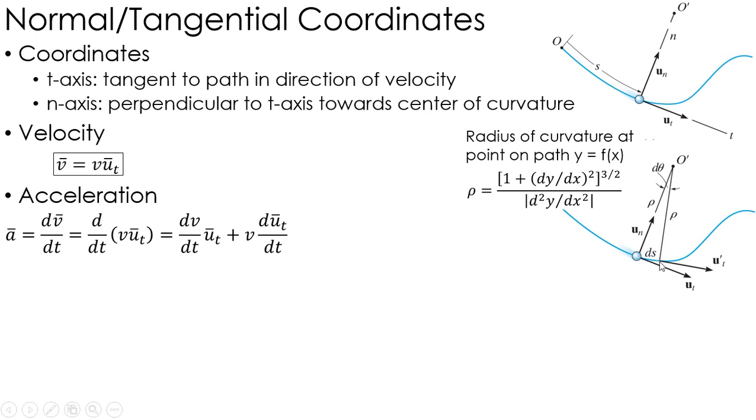Again, I move from here to here, some position ds through an angle of what I'm going to call d theta at a radius of curvature of rho, which I can find from this. Therefore, that arc length, or ds, is simply that radius of curvature rho times d theta.